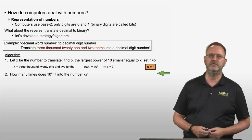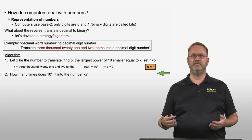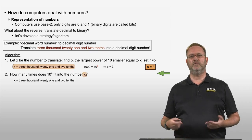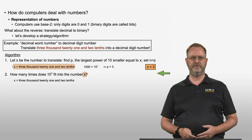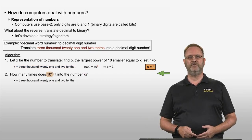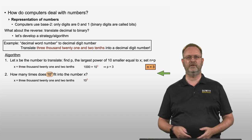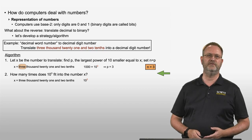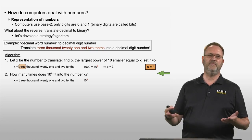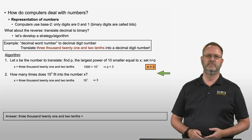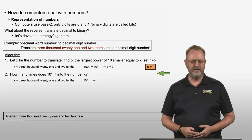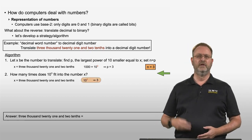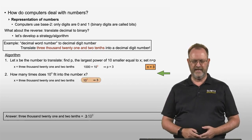Step 2 of the algorithm is to ask: how many times does 10 to the power n fit into the number x? Our x was 3,021 and 2 tenths, and n equals 3, so 10 to the power n is 1,000. How many times does 1,000 fit into 3,021 and 2 tenths? That is 3 times. So our answer for the translation is that 3,021 and 2 tenths equals 3 times 10 to the power 3.